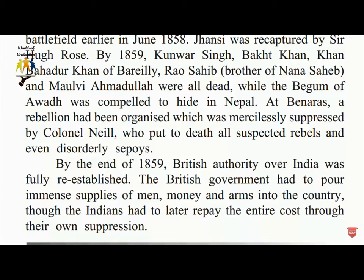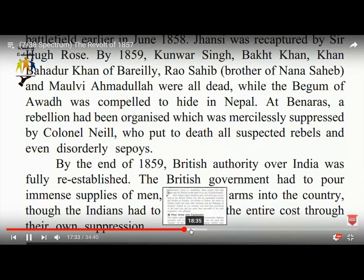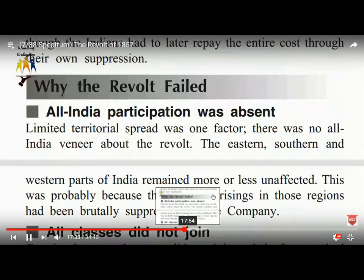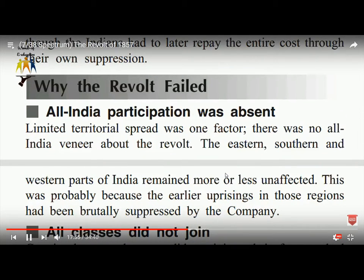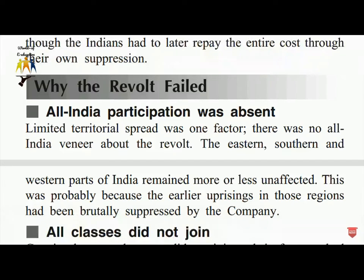By the end of 1859, British authority over India was firmly re-established. The British government had to pour immense supplies of men, money, and arms into the country, which the Indians had to later repay through the cost of their own suppression. Now we discuss why the revolt failed. All-India participation was absent; limited territorial spread was one of the factors.